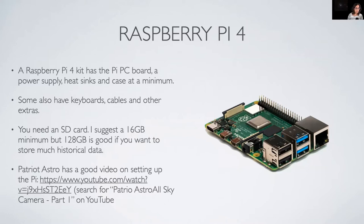You're going to need the Raspberry Pi — this is a Pi 4. You can get a bare-bones Pi with some heat sinks, or kits that include cables and keyboards. You don't necessarily need those extras. You'll need a minimum of a 16-gigabyte SD card, but 128 gigabytes is a better choice, especially if you want to store historical data on the Pi. There's a YouTube channel called Patriot Astro that has a really good video on how to set up the Pi — search for Patriot Astro All-Sky Camera Part 1.